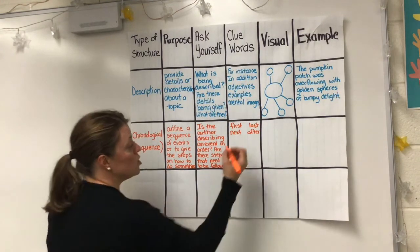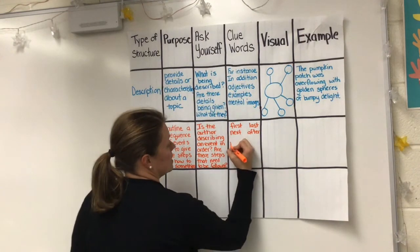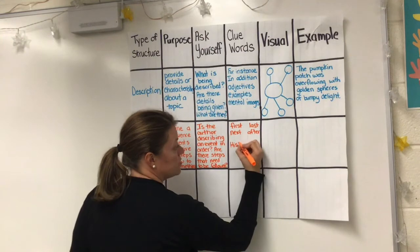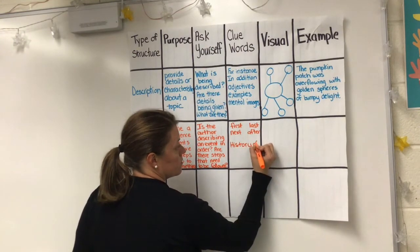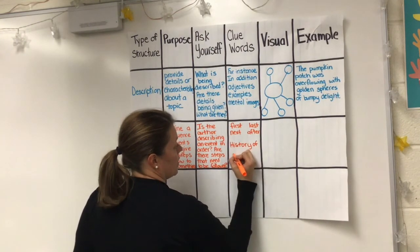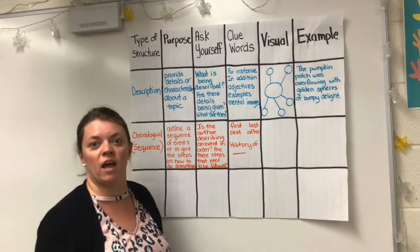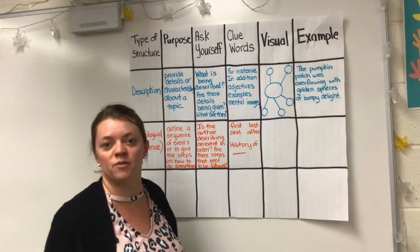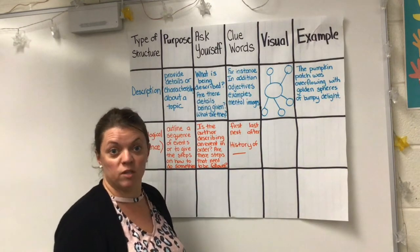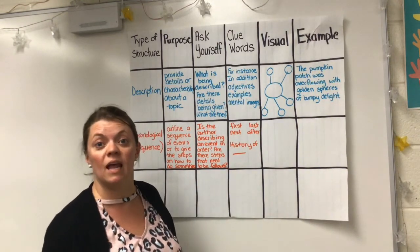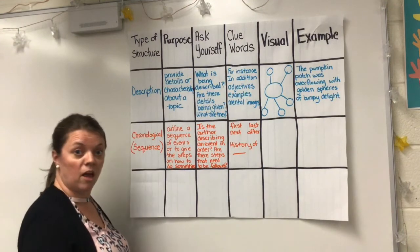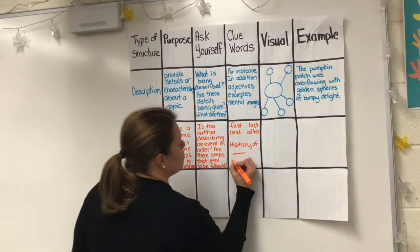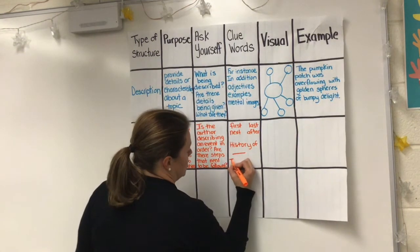You also might see something like the history of something. For example, if you were looking at the history of marshmallows or the history of Halloween, that would be a chronological text structure. It could also be instructions.